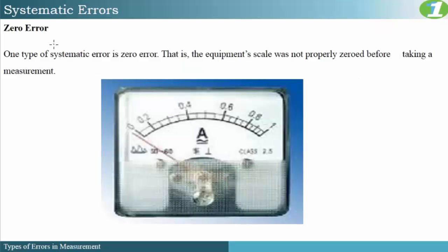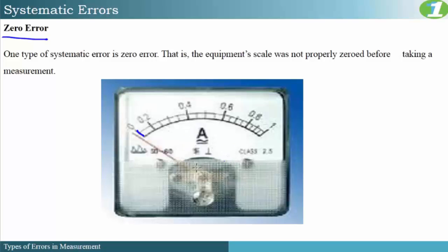The first type of systematic error is the zero error. This error is when the equipment scale is not at zero before you begin to take your measurement. Looking at this illustration, it is obvious that we have a zero error — this is our zero position, and with nothing being measured, we notice that our pointer is actually below zero. So this is a typical zero error on an equipment, and remember it has to do with something being wrong with the equipment itself.